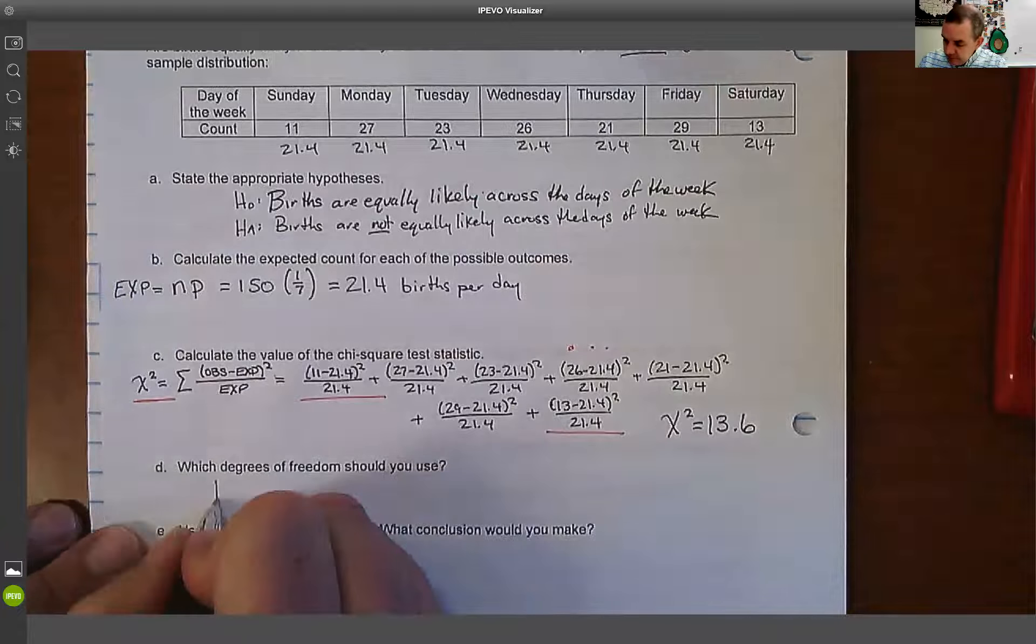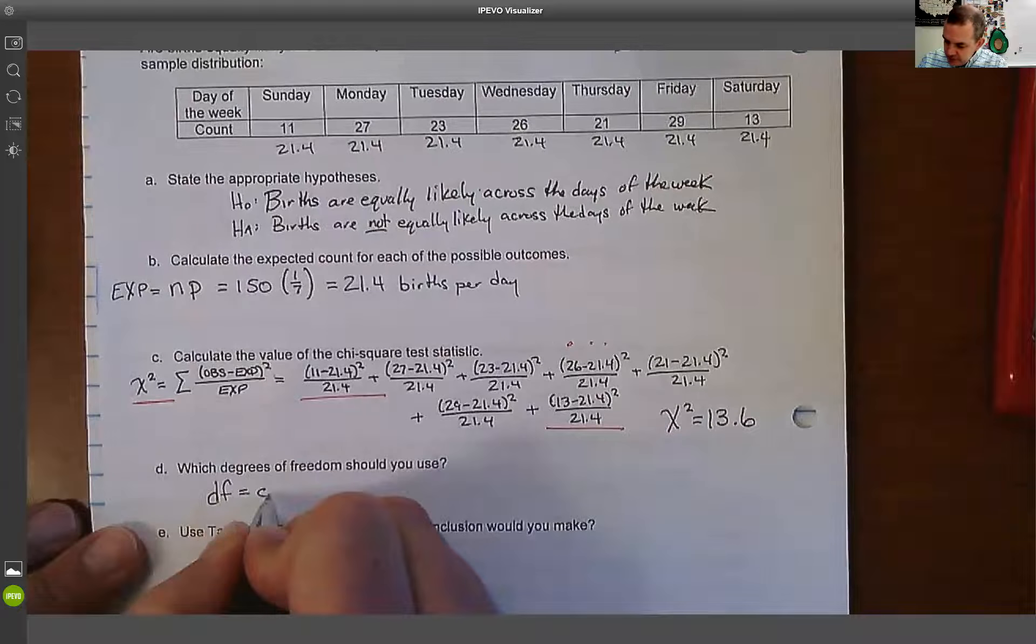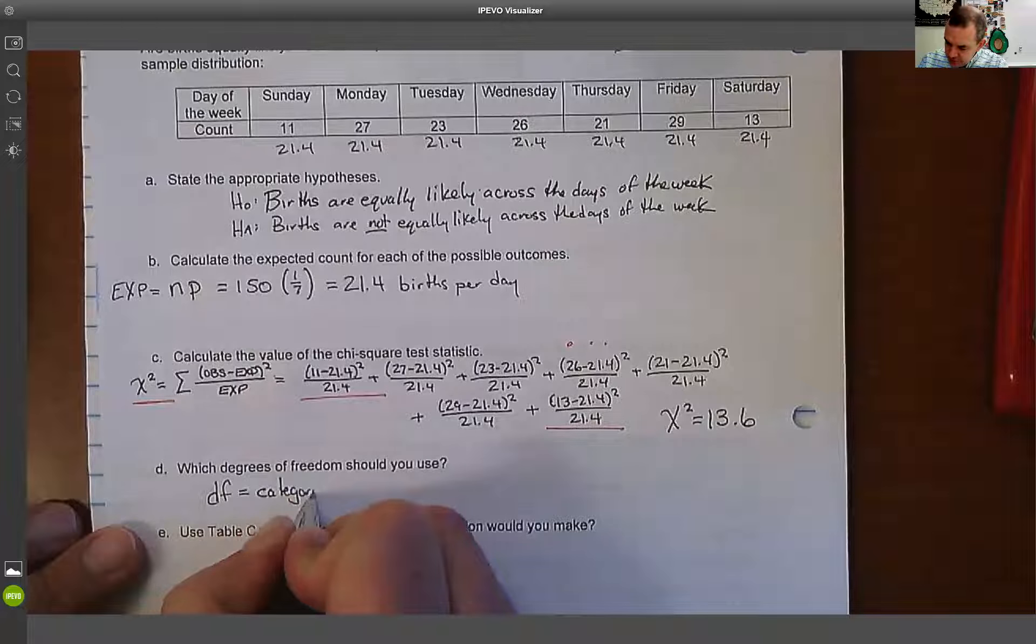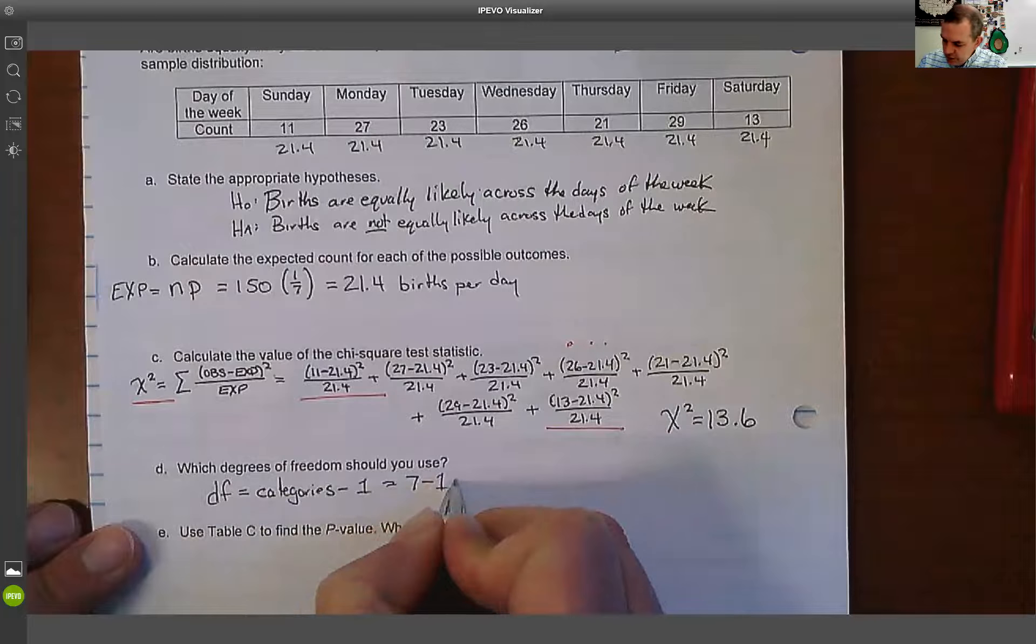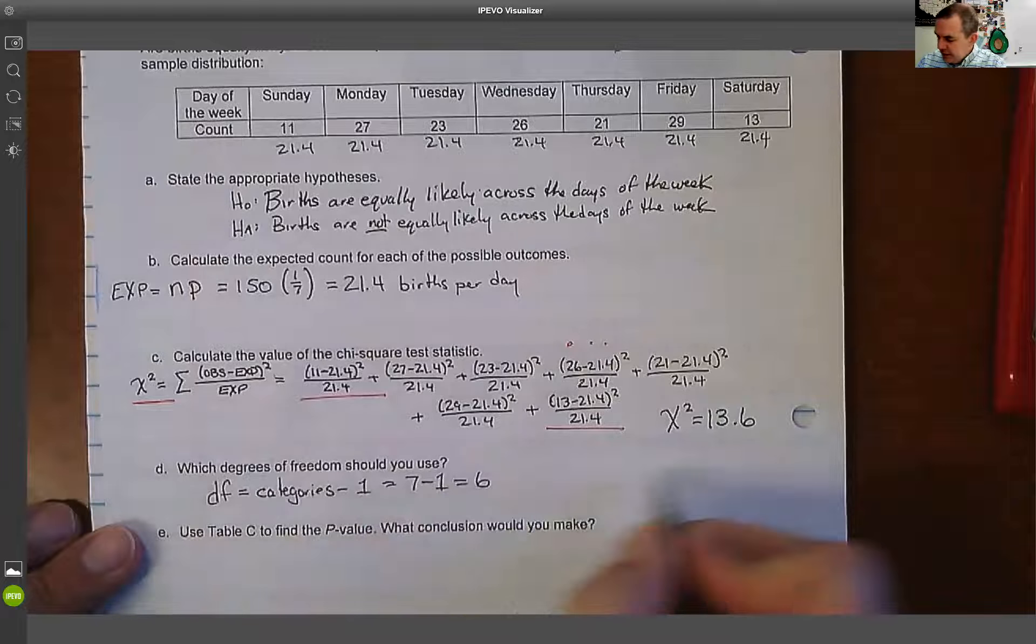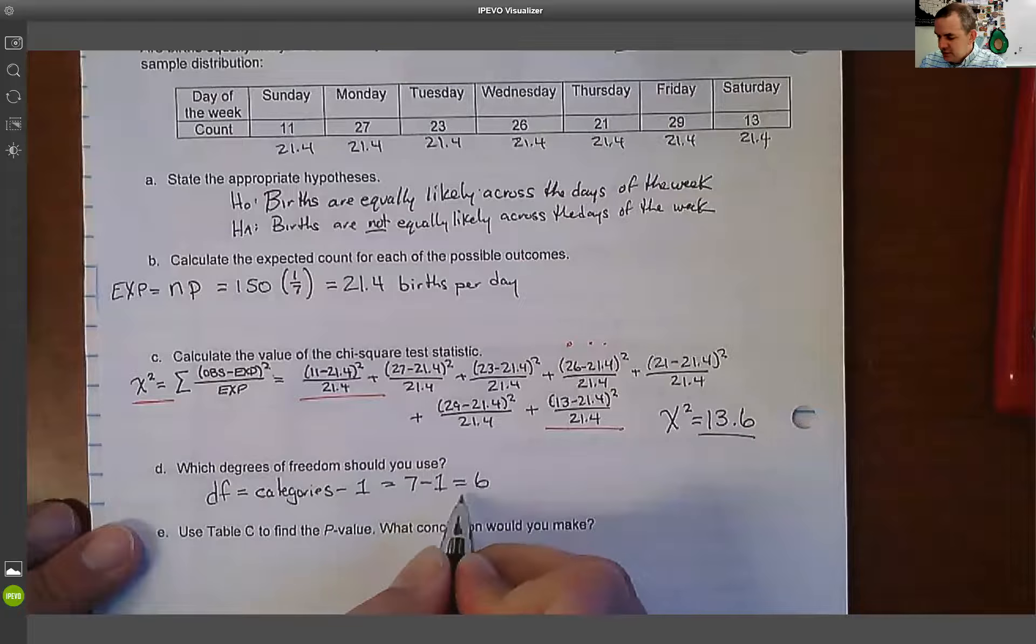Degrees of freedom. Degrees of freedom, it should seem somewhat familiar. It's going to be your number of categories minus one. So in this case, we have seven days of the week minus one. So what we're going to do is we're going to compare this 13.6 to this degrees of freedom.